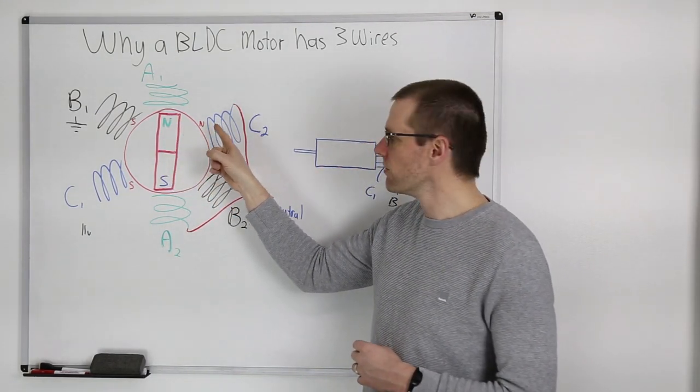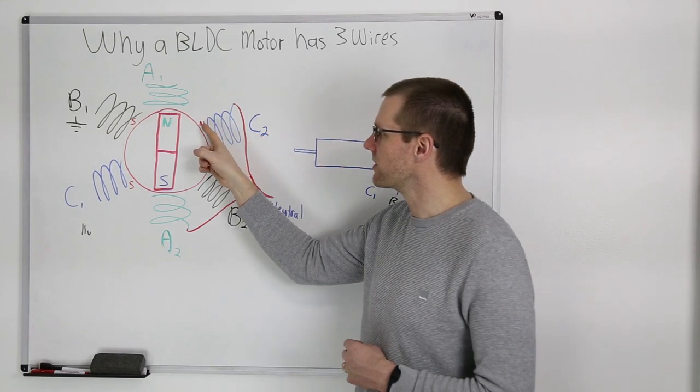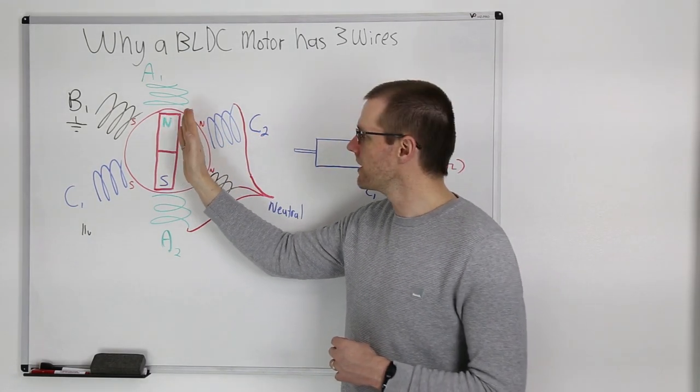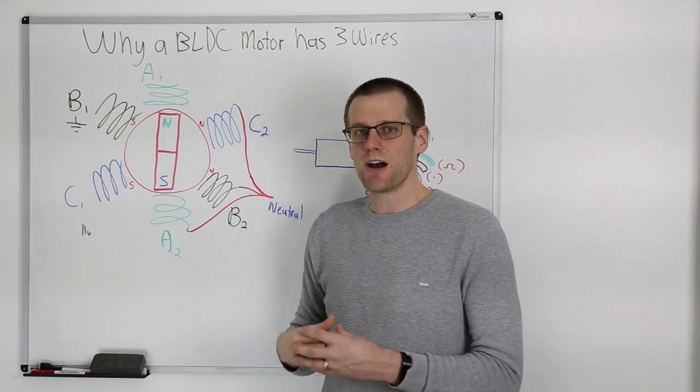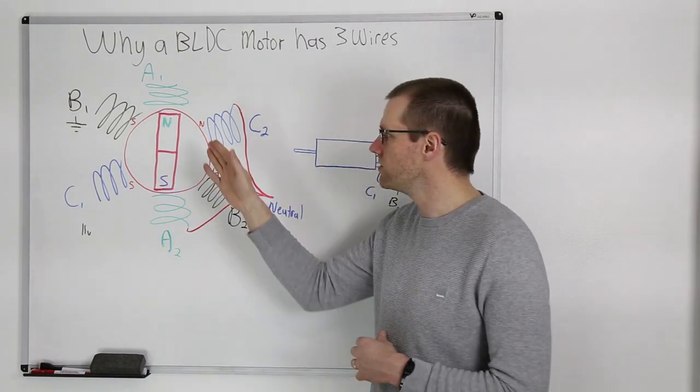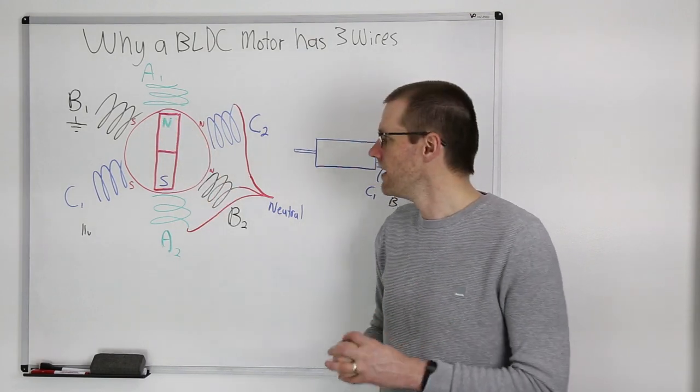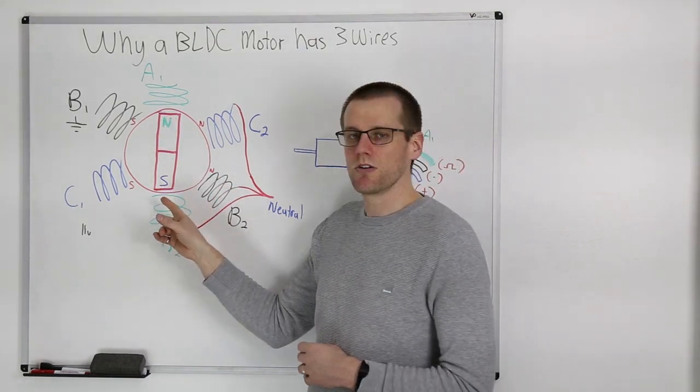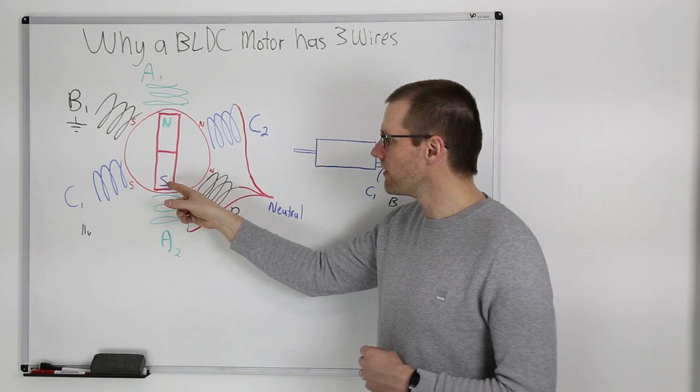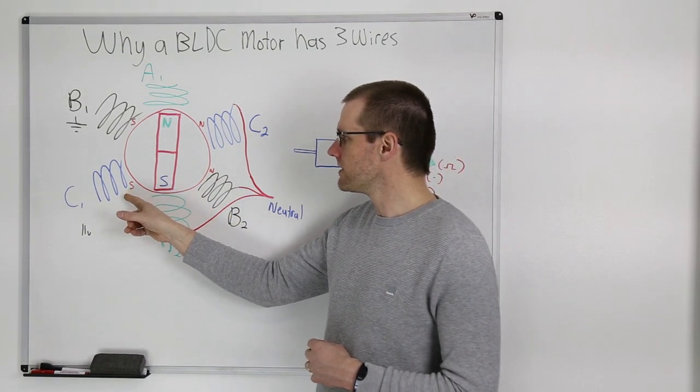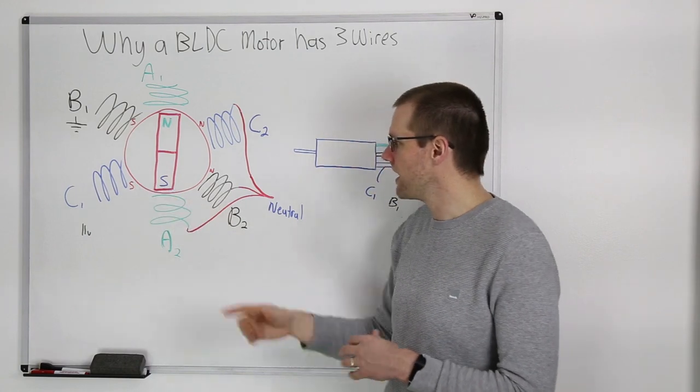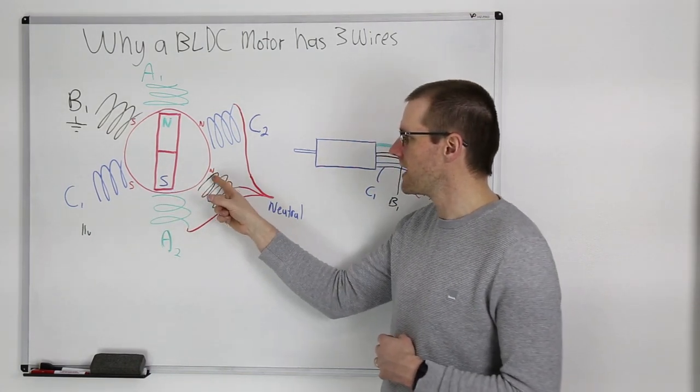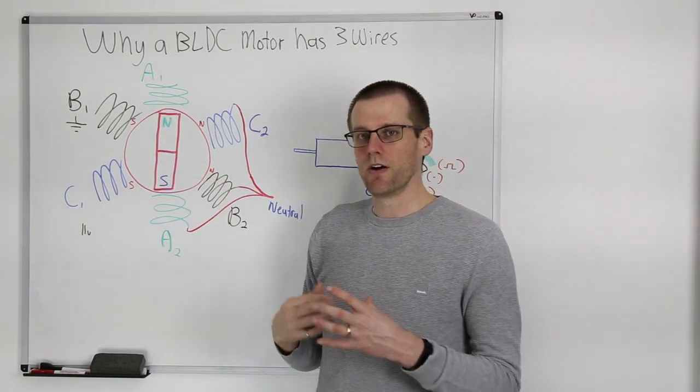Very important because now we have two coils that is going to influence the motion of our rotor. Same exact thing is happening here on the bottom where we have the south pole of our magnet being repelled against C1 because we have the same pole here and it's being attracted to B2 which has a north pole there as well.